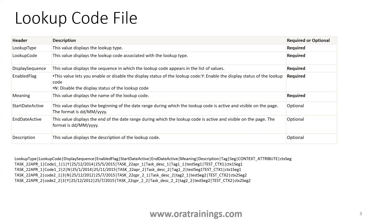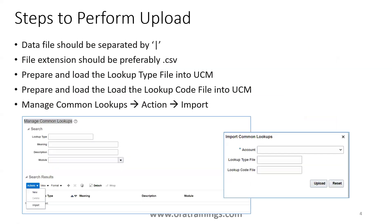Let's see the format and steps involved in preparing the file and performing the import. The first and foremost important thing is that values in the file should be separated by a pipe symbol. The file extension should preferably be .csv, though .txt will also work — either CSV or text.